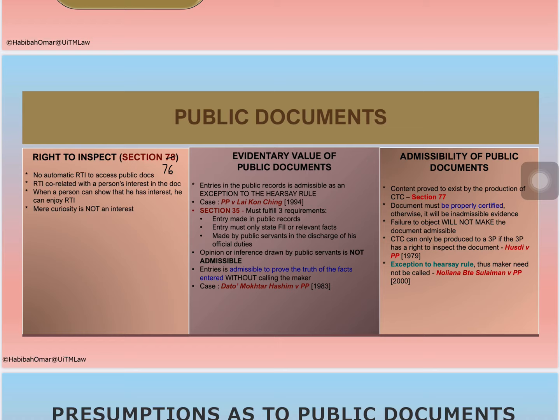So for a public document to have evidential value, the entry must be made in a public record, it must be relevant to the facts in issue, and it must be made by a public official in the performance of his official duty. If a public official makes an entry into a record book, it is deemed to be true as long as it complies with the requirements of section 35.